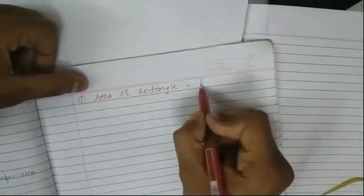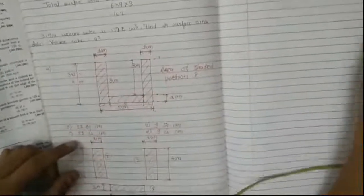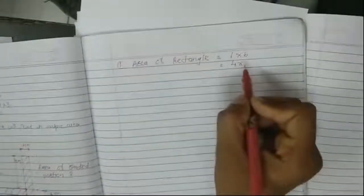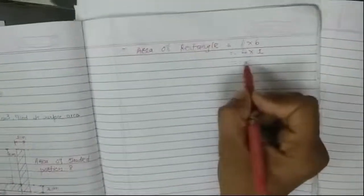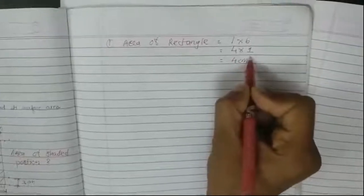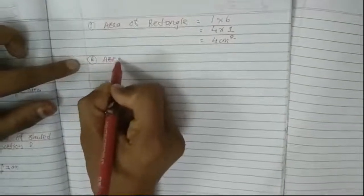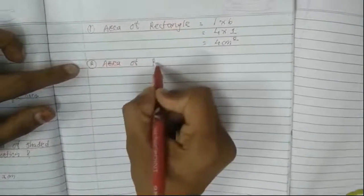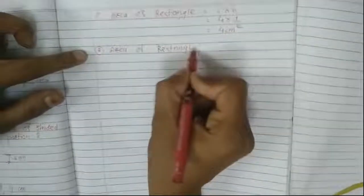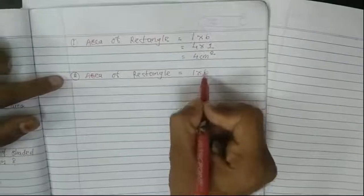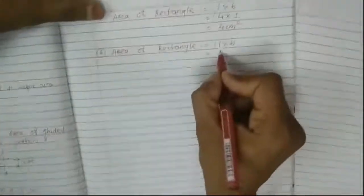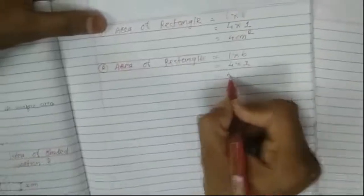We find the area of each of the three rectangles. Area of a rectangle equals length times breadth. The first rectangle has length 4 centimeters and breadth 1 centimeter: 4 times 1 equals 4 centimeter square. The second rectangle also has height 4 centimeters and breadth 1 centimeter: 4 times 1 equals 4 centimeter square.